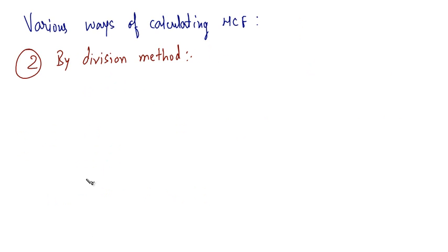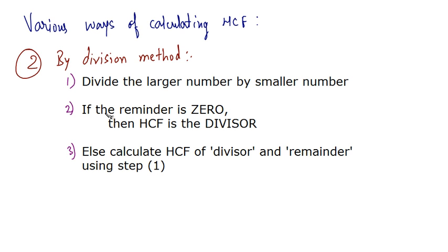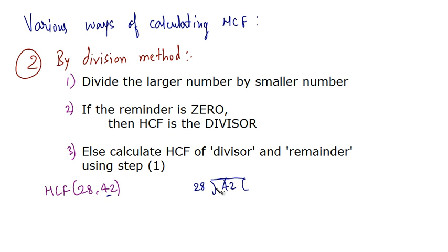Another way of calculating HCF is by the division method. Let's find the HCF of 28 and 42 using this method. Step 1: divide the larger number by the smaller number. The larger number is 42, so we divide 42 by 28. 28 times 1 is 28, and the remainder is 14. Step 2: if the remainder is 0, then the HCF is the divisor. But here the remainder is not 0, so we move to step 3: calculate the HCF of the divisor and the remainder, which is HCF of 28 and 14.